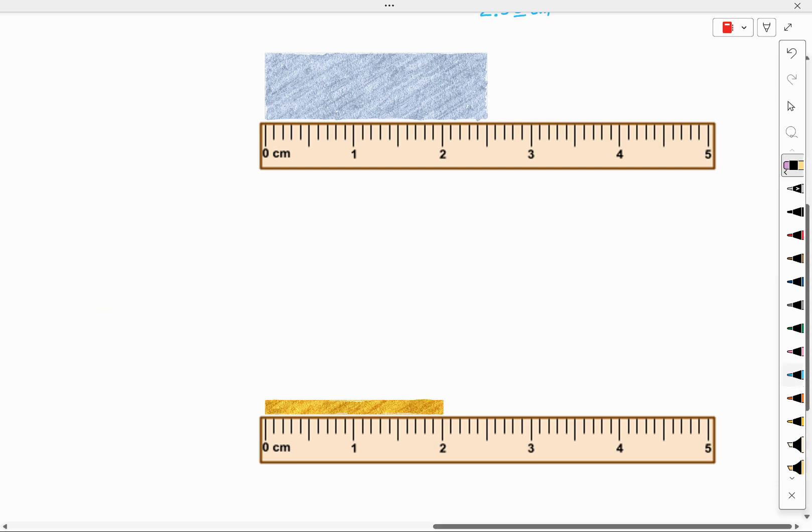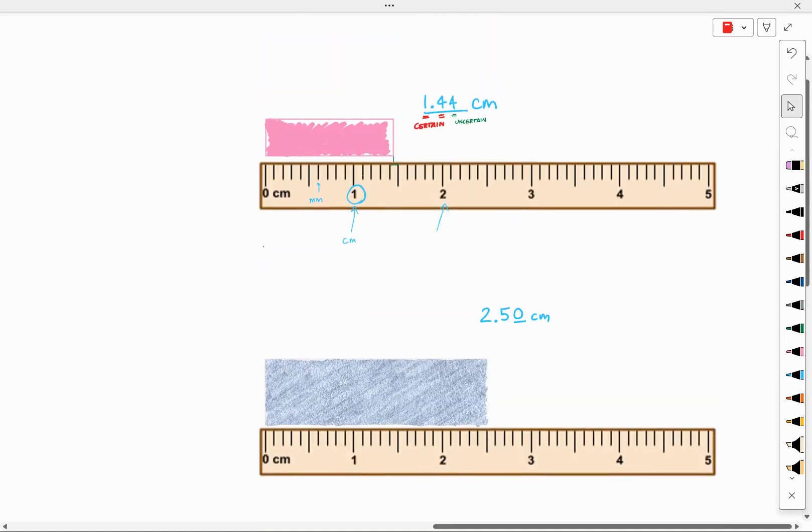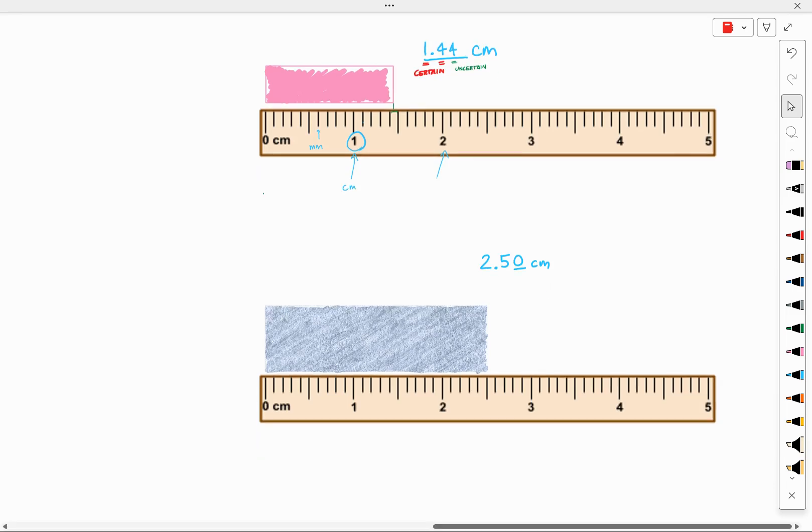Notice that I just made two other measurements with this same ruler. One of them was 1.44 centimeters and one was 2.50 centimeters. Both measurements are to the hundredths of a centimeter place.